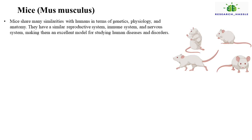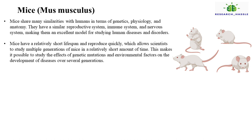Eighth, mice. Mice share many similarities with humans in terms of genetics, physiology, and anatomy. They have a similar reproductive system, immune system, and nervous system, making them an excellent model for studying human diseases and disorders. Mice have a relatively short lifespan and reproduce quickly, which allows scientists to study multiple generations in a relatively short amount of time. This makes it possible to study the effects of genetic mutations and environmental factors on the development of diseases over several generations.